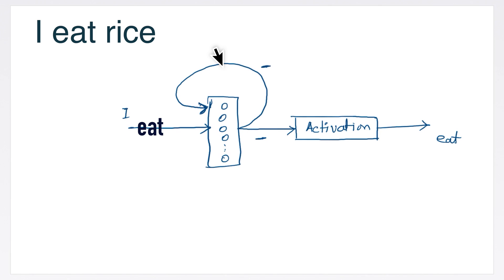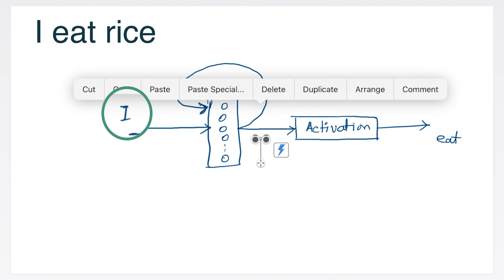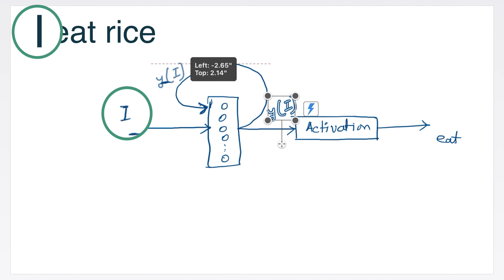the hidden state is fed back to the cell with the word eat. With the word I, the hidden state was either random or all zeros. It does not matter much because I was the first word.